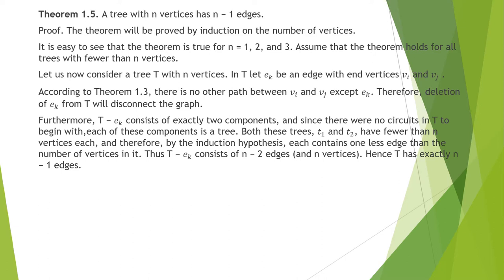Consider a tree T with n vertices. Let ek be an edge with endpoints vi and vj. According to the theorem, there is no other path between vi and vj except ek. Therefore, deletion of ek from T will disconnect the graph. Furthermore, T minus ek consists of exactly 2 components. Since there were no circuits in T, each component is a tree — call them T1 and T2, each with fewer than n vertices. By induction, each consists of one less edge than its number of vertices. Thus T minus ek consists of n minus 2 edges, so T has exactly n minus 1 edges.